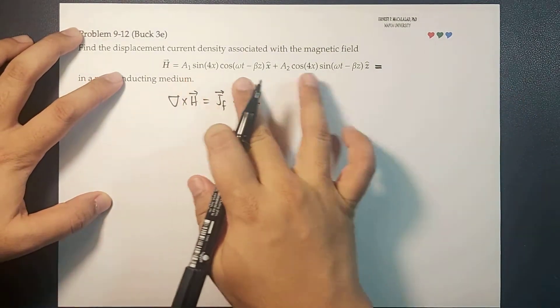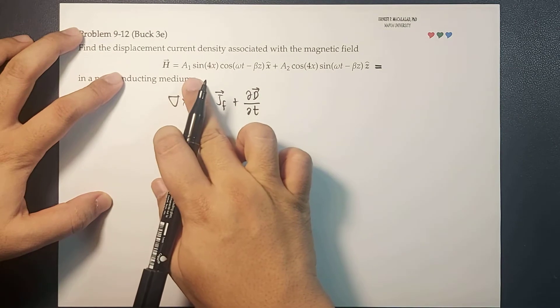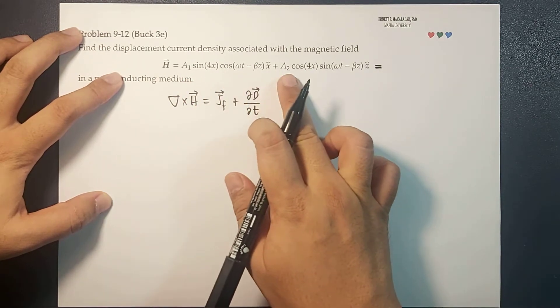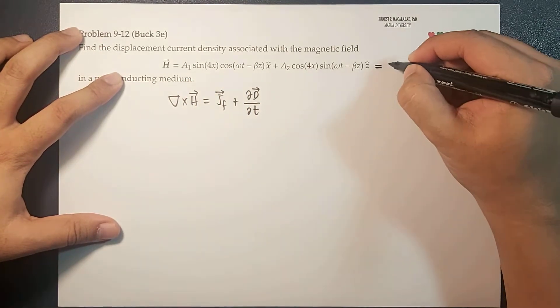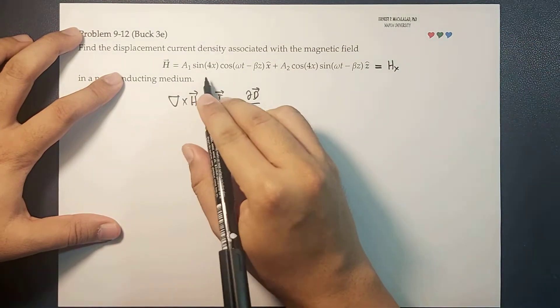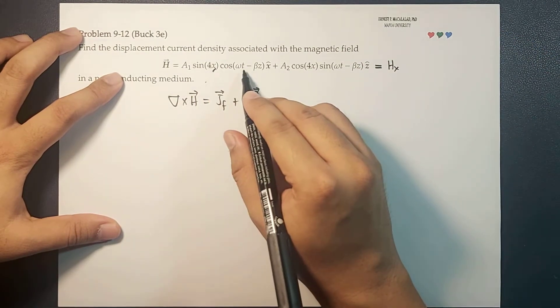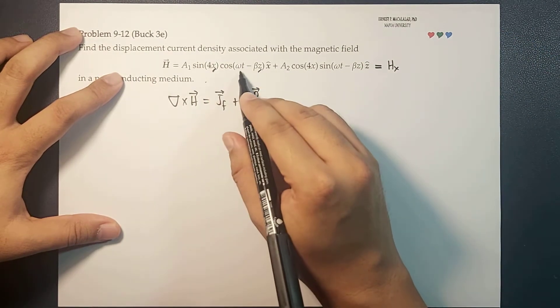that it only has two components: it has an X component and a Z component. So our X component is a function of x, z, and time